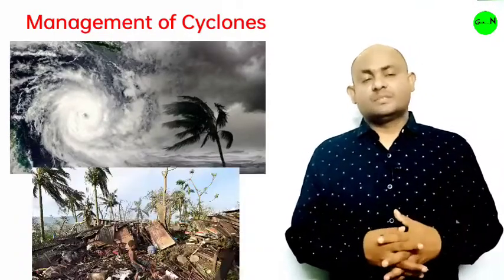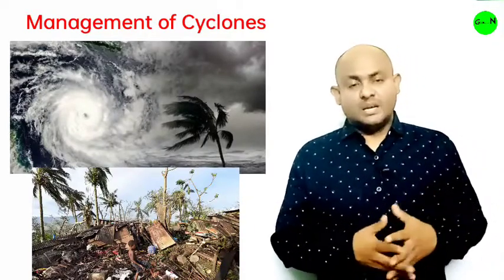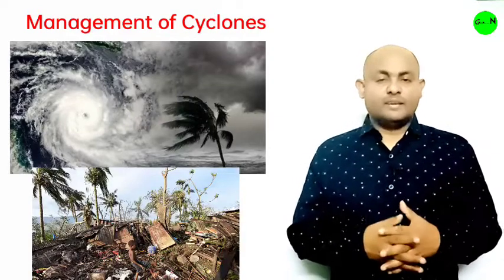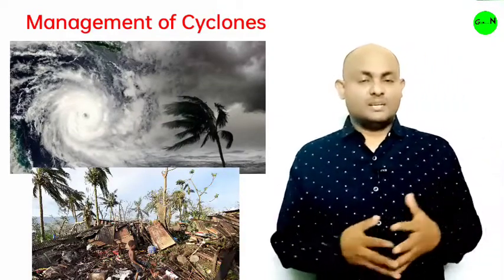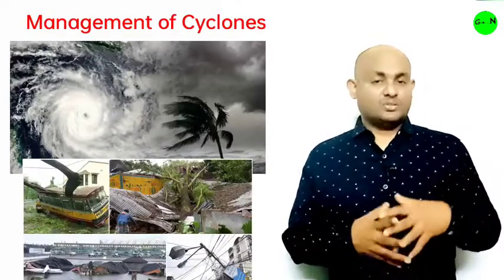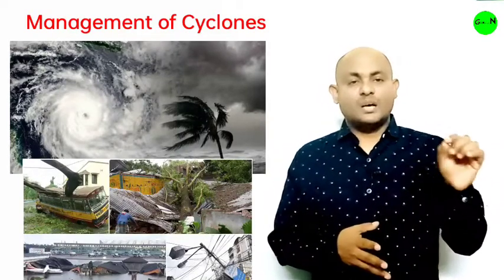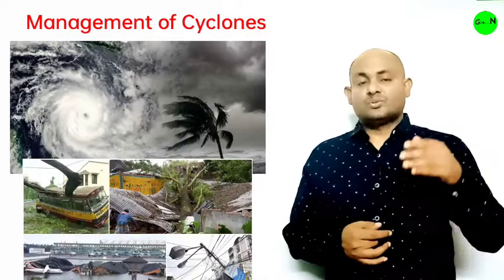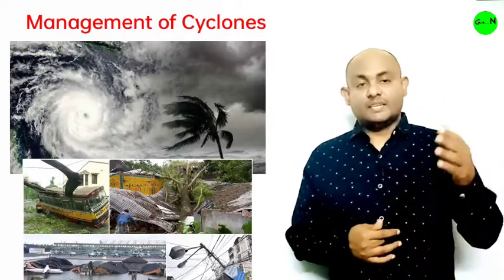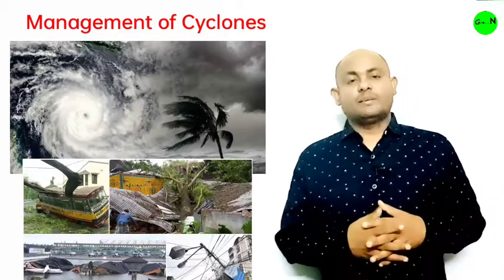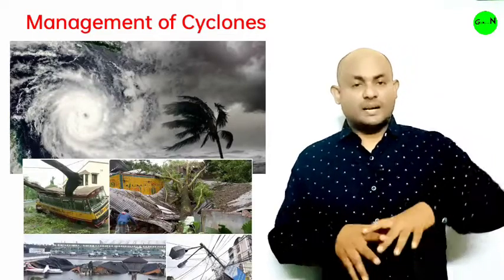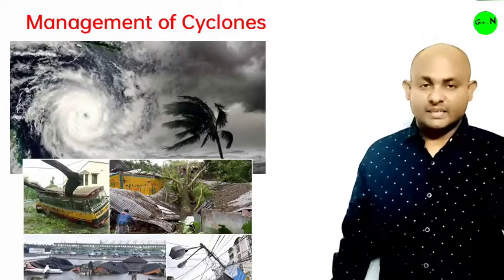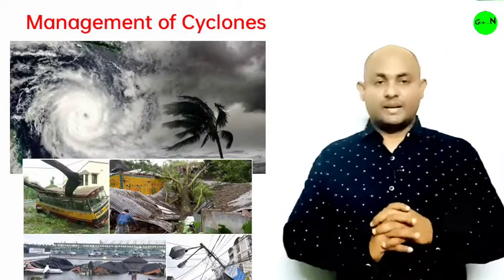Western disturbance is a common weather phenomenon in India. It is an extra-tropical cyclone originating in the Mediterranean region that brings sudden winter rain to the northwestern part of the Indian subcontinent. It causes most winter and pre-monsoon season rainfall across northwest India — Punjab, Haryana, Delhi, and western Uttar Pradesh. The phenomenon is associated with cloudy skies, higher night temperatures, and unusual rainfall. This precipitation during the winter season is of great importance for agriculture, particularly for Rabi crops including wheat. India gets close to five to ten percent of its total annual rainfall from western disturbances.